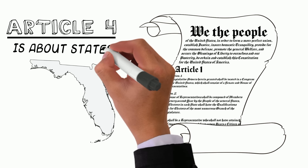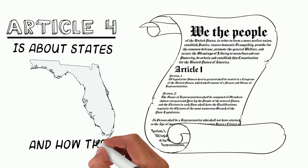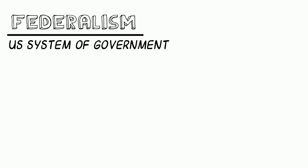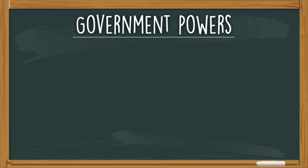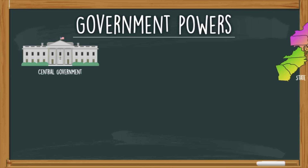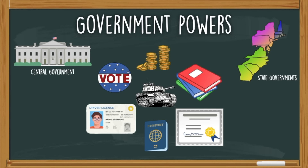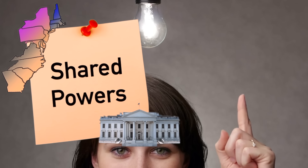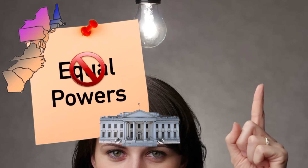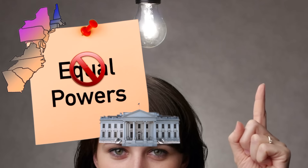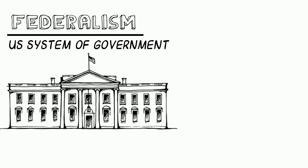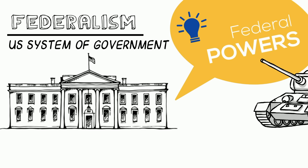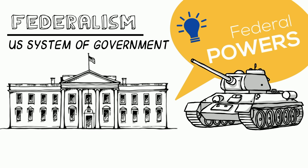The main purpose of Article 4 is about states and how they should behave, specifically with each other. But Article 4 also establishes the concept of federalism. In this system of government, the central and state governments share powers and responsibilities. A key point is that they share powers — not that those powers are equal. This is a pretty common misconception about the federal system of government. So when Article 4 says that states are guaranteed to be protected from invasion, this is defining powers that are specific to the central government.